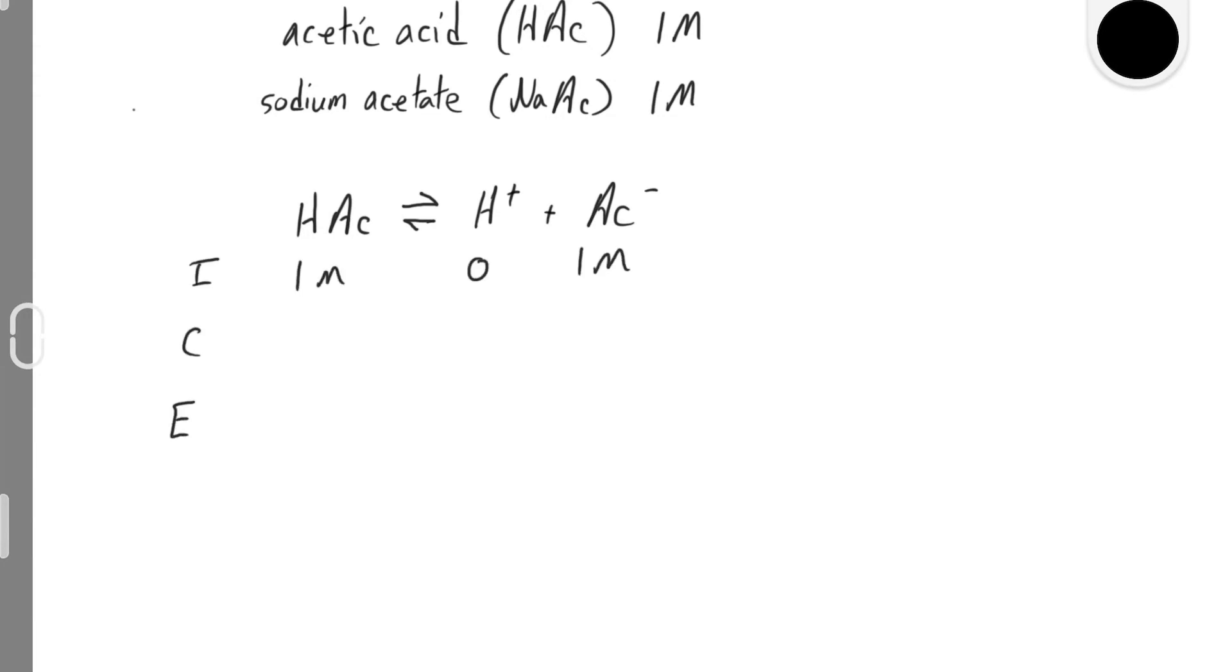Sodium acetate is 1 to 1 with the acetate ion, and if sodium acetate is 1 molar, that means the acetate ion concentration at initial conditions is also 1 molar. The acetic acid concentration is 1 molar, and initially the H+ concentration is 0.